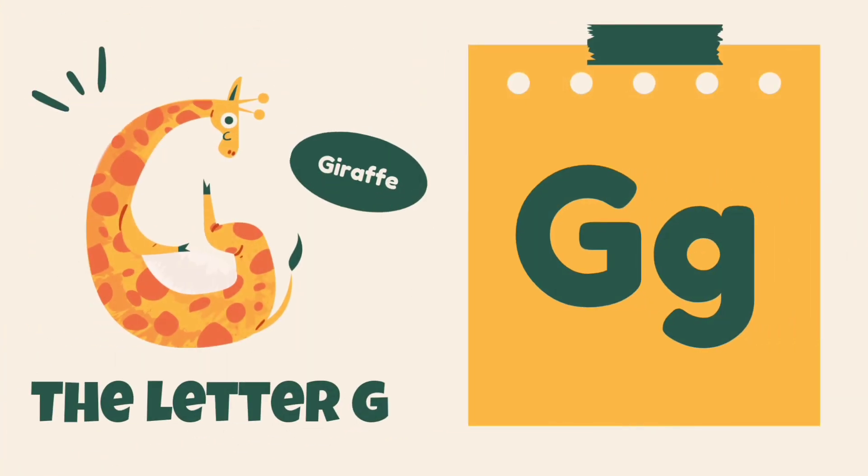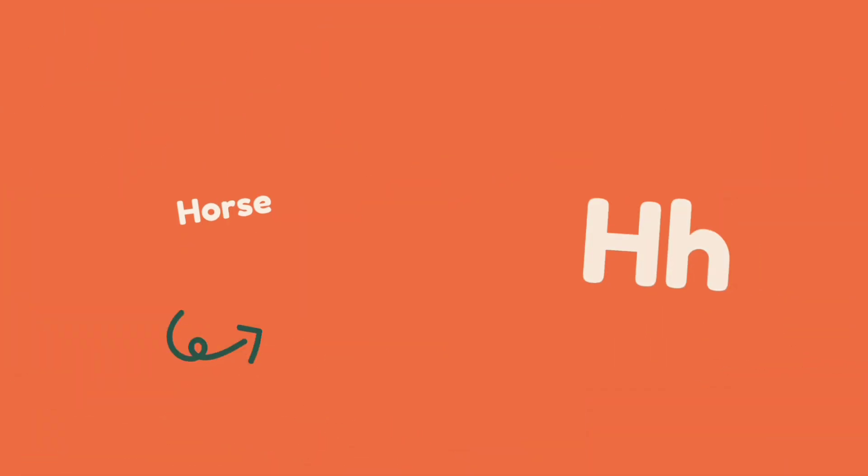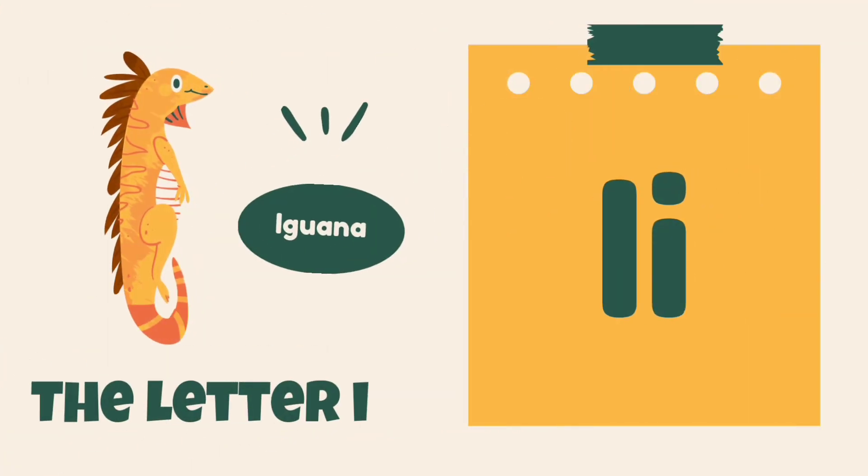G is for giraffe, giraffe. H is for horse, horse. I is for iguana, iguana.